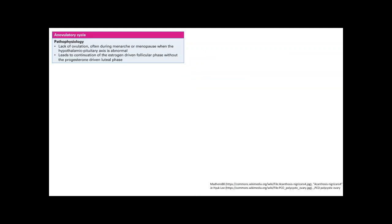So the next thing is anovulatory cycle. I've already talked about this in the previous lecture. But this is basically what happens is you get lack of ovulation. And often this is in menarche or menopause when your hypothalamic pituitary axis is undeveloped. So it's not working very well. So your estrogen is not getting secreted very consistently.